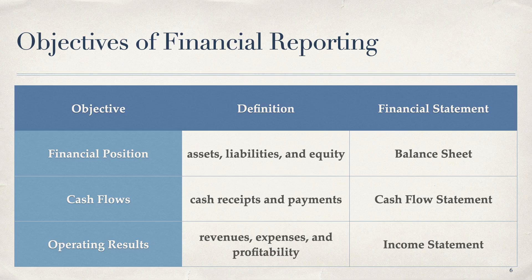The third objective is operating results. We want to look at things like revenues, expenses, and the profitability of our company, and that's going to be an income statement idea. So the reason we have three financial statements is to look at the financial position with the balance sheet, the cash flow situation with the cash flow statement, and how well we're doing operationally — the operating results — with the income statement.